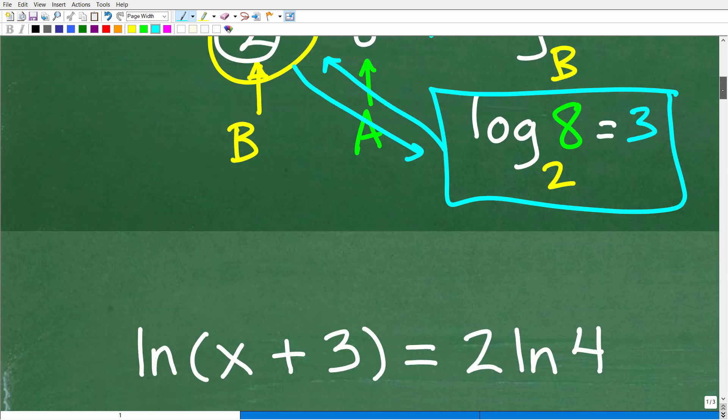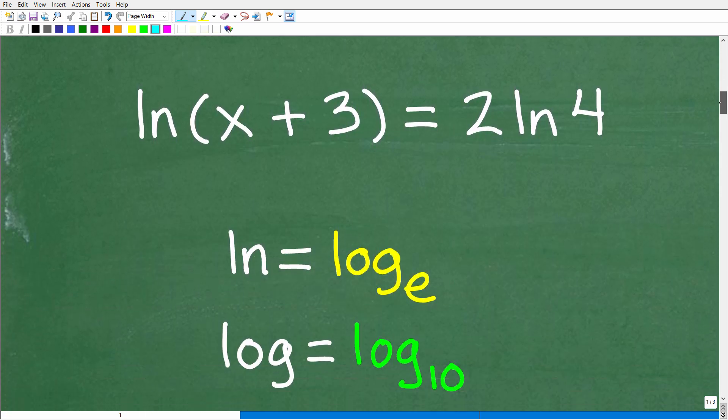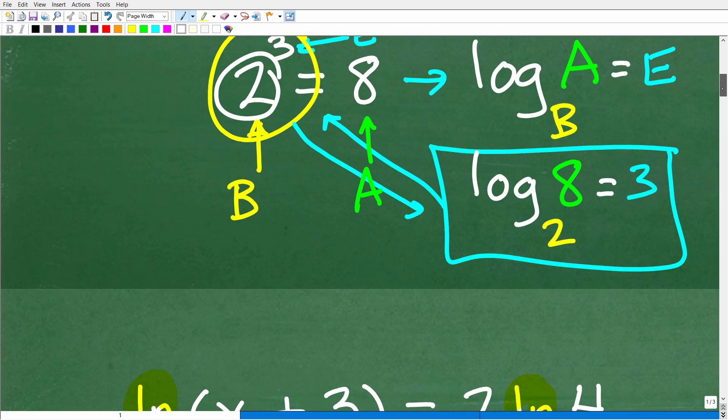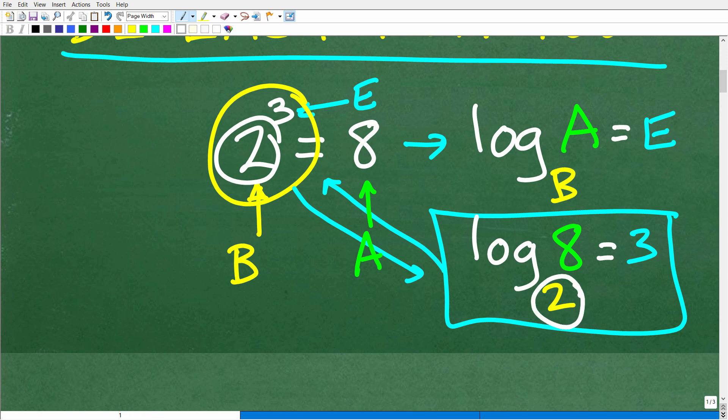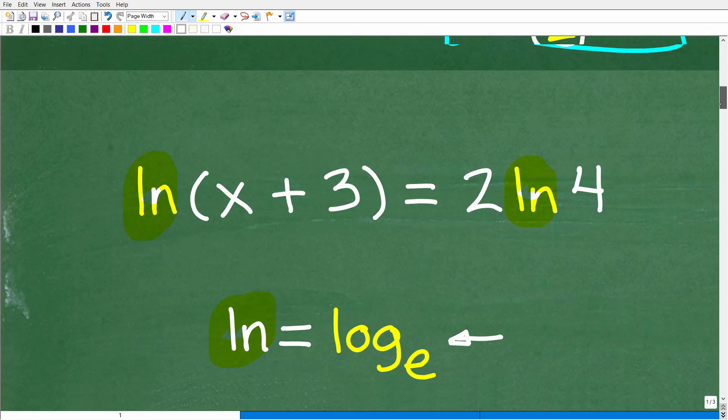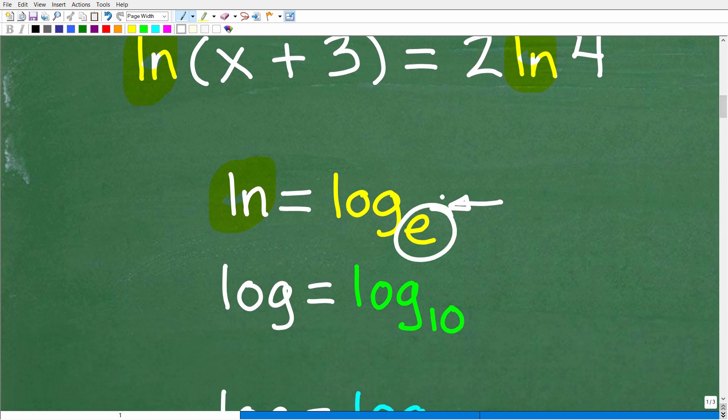If you understand what I just told you here, this bacon and eggs business, then you should be able to understand the rest of this problem. Let's get into this right now. The big thing that we want to notice here is this ln. What does ln mean? ln means log base e. Over here we had log base 2. ln is something called log base e.